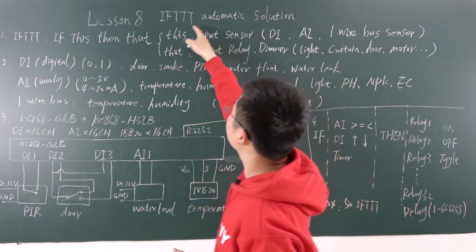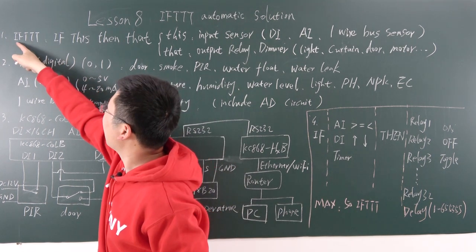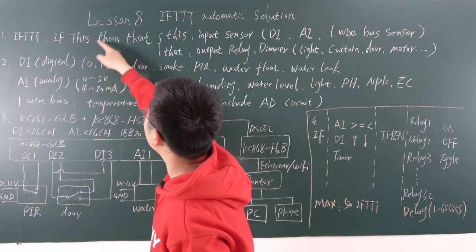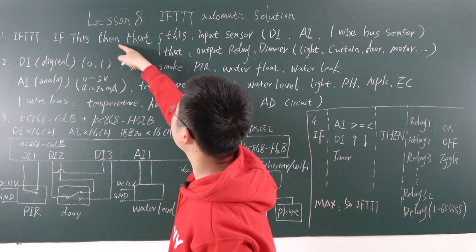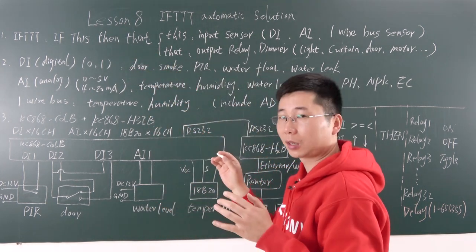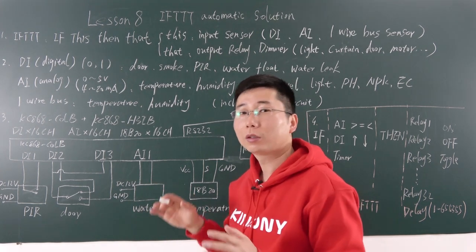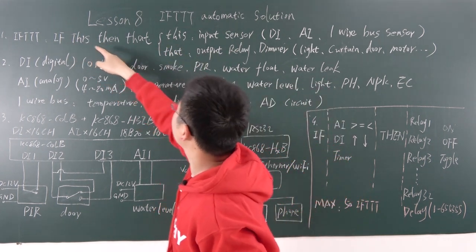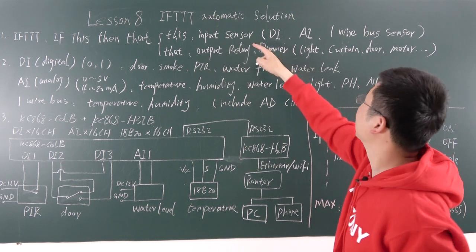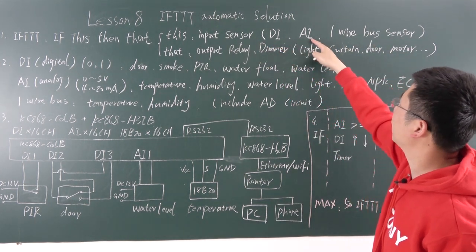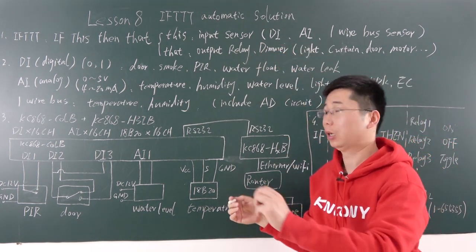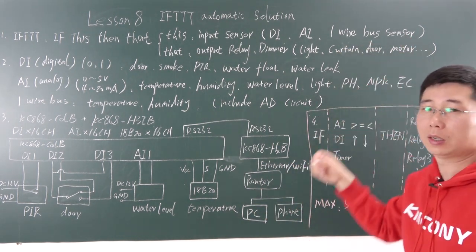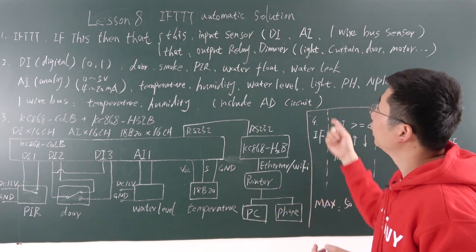So we can use this IFTTT Automatical Function solution. Let's look at what this IFTTT means. That is IFTTT - if this then that. So we just need to let the input sensor and output track by the way we set.